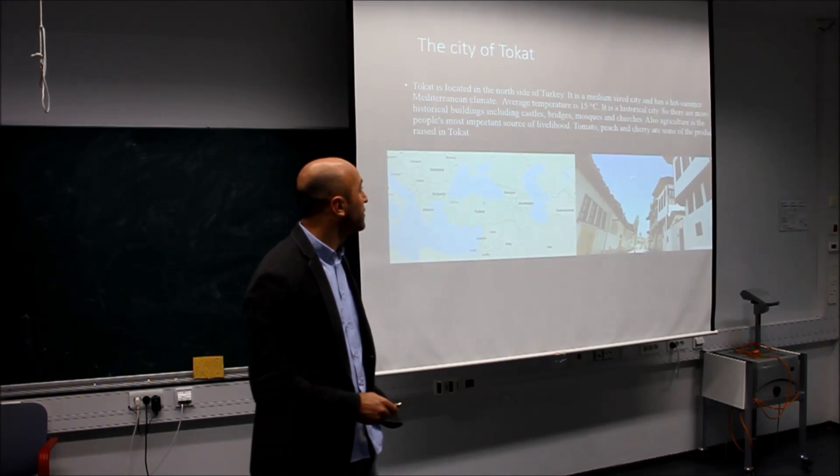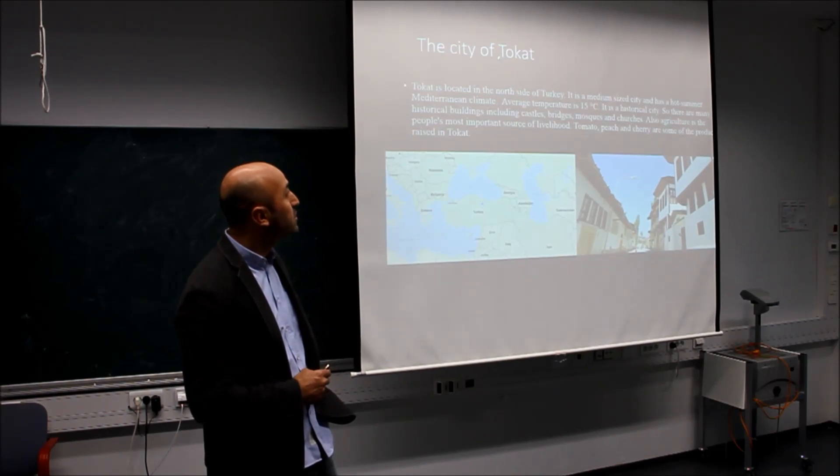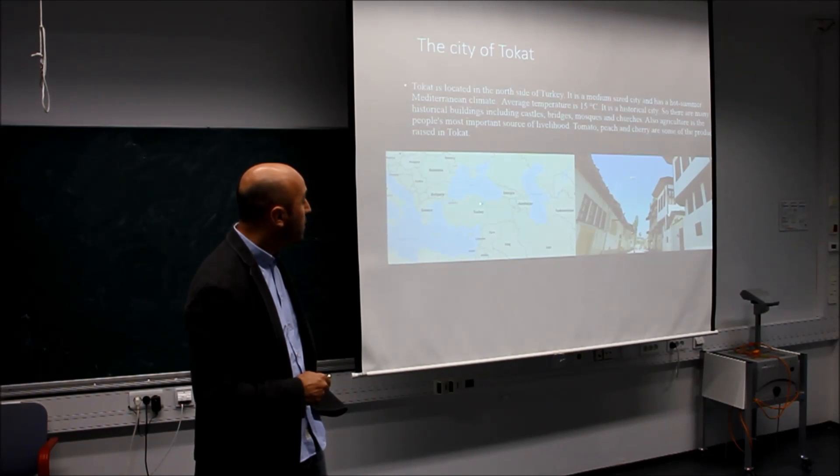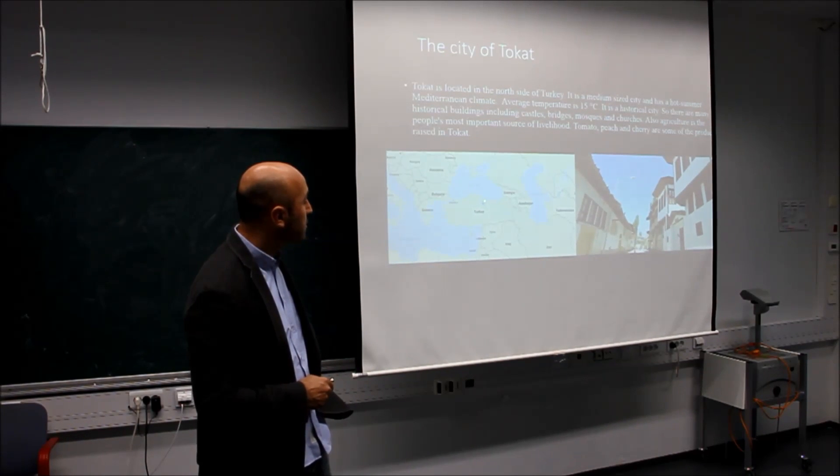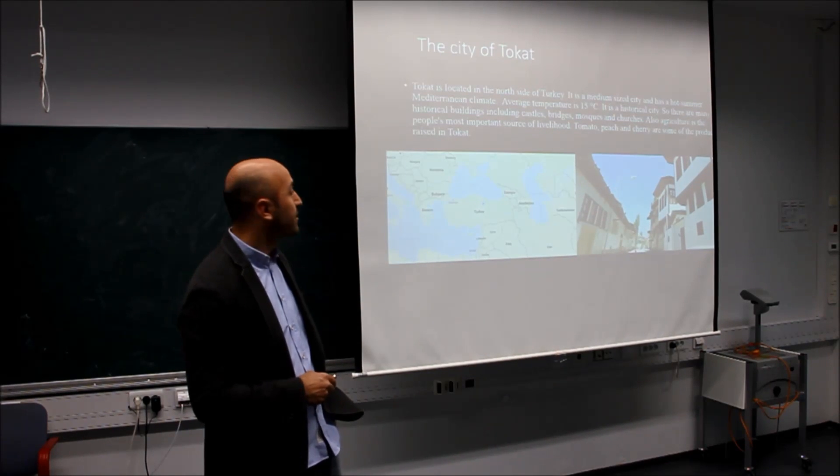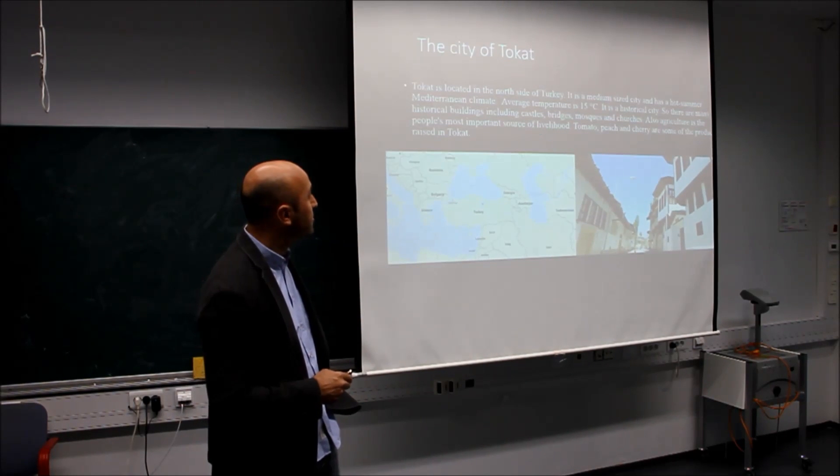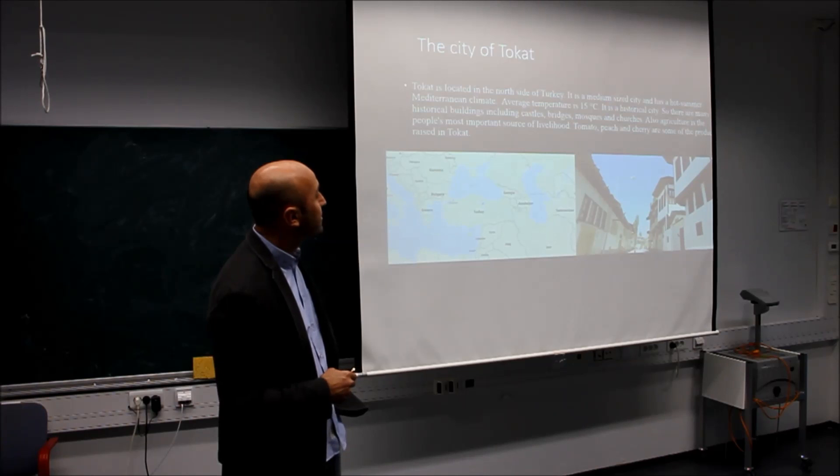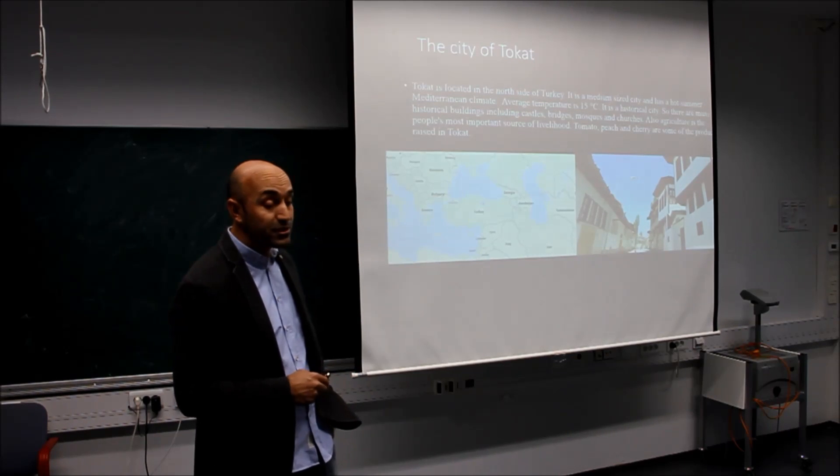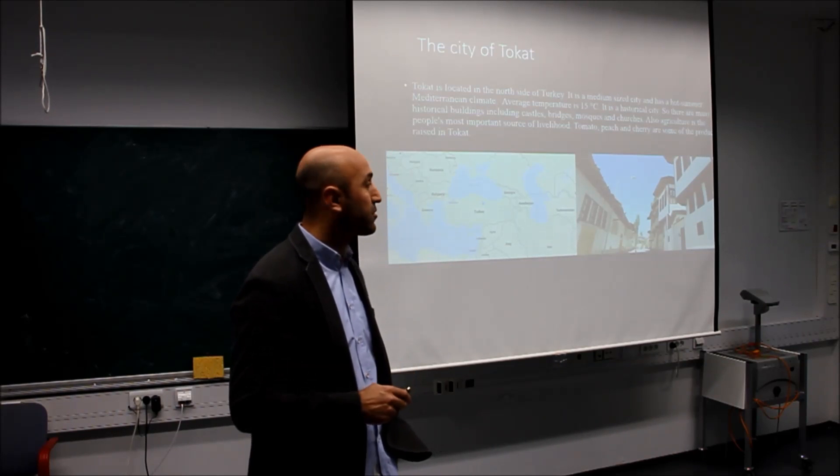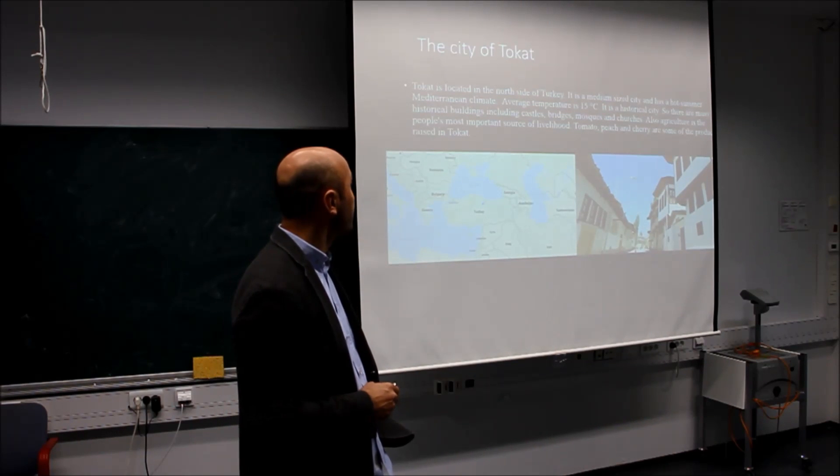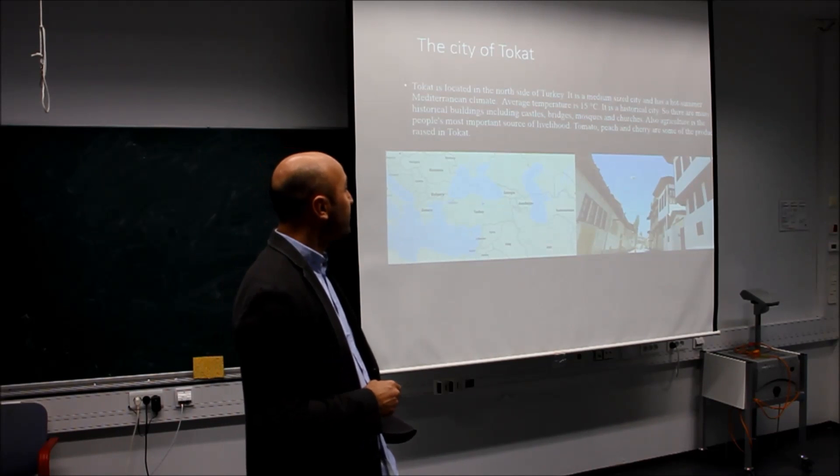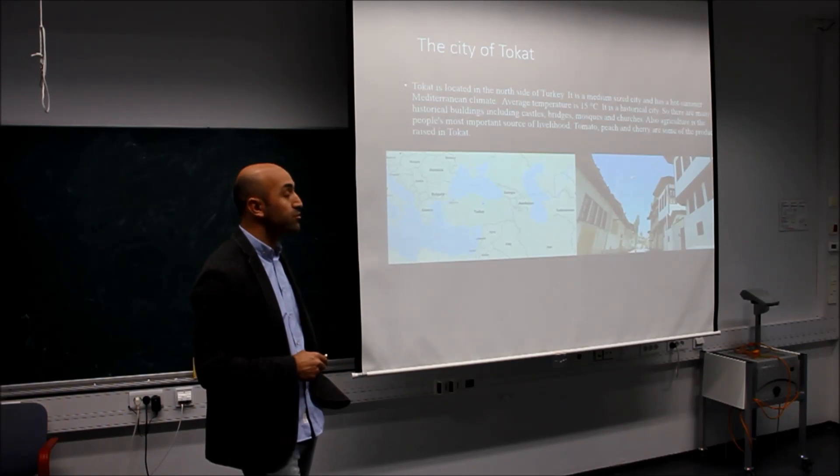Also, the city I live in is named Tokat. It is located on the north side of Turkey, close to the Black Sea. Although it is close to the Black Sea, it has a hot summer Mediterranean climate. It is a medium-sized city. Also it is a historical state with deep history, so there are many kinds of historical buildings, castles, bridges, mosques, and churches.